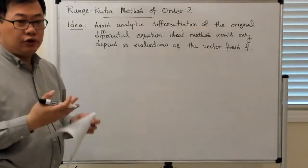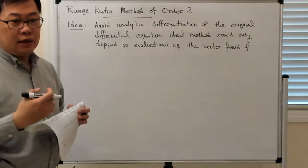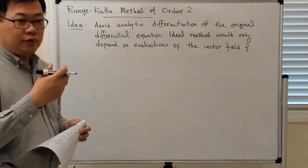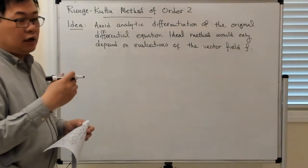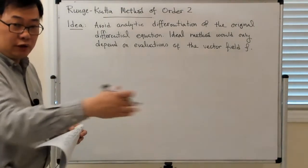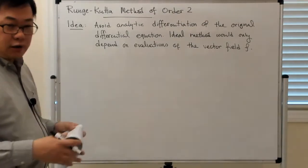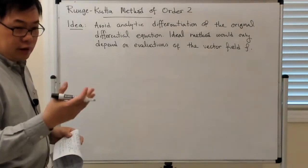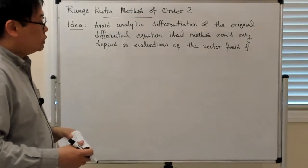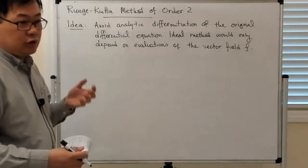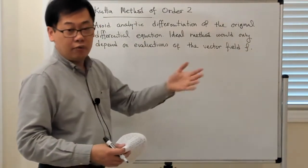One way to think about this is through the contrast between the Taylor polynomial for approximating a function versus the Lagrange interpolating polynomial. In one case, you compute the function value and its higher derivatives at a given point, versus trying to compute the function values at a bunch of different points. Both give you a reasonable approximation of the solution.